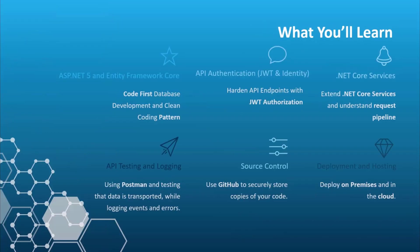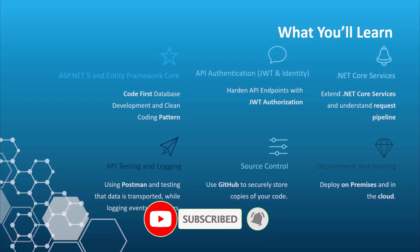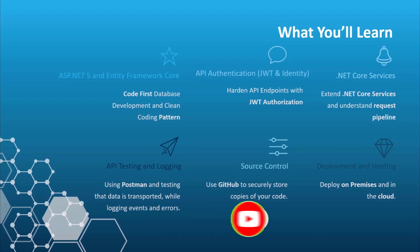In a nutshell, you're going to learn ASP.NET 5 and Entity Framework Core. We're going to be using code-first database development and exploring clean coding patterns. We'll be looking at API authentication using JSON Web Tokens, or JWT for short, and how we can protect and harden our endpoints from unauthorized or unwanted access. We'll look at understanding the .NET Core Service Pipeline and how we can extend it and put in our own middleware. We'll also be looking at API testing and logging, using Postman and Serilog respectively. And we'll be looking at how Swagger can help with documenting our API and testing.